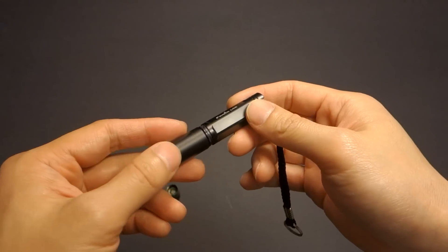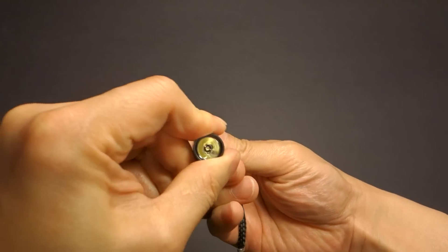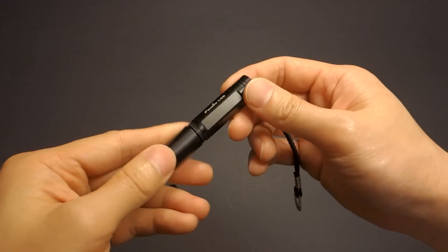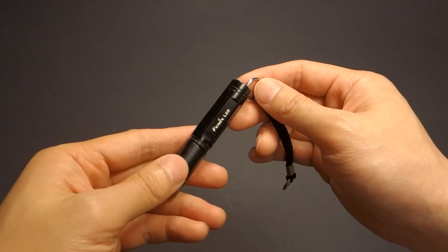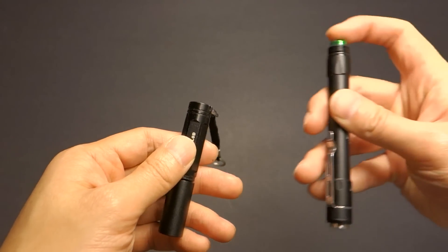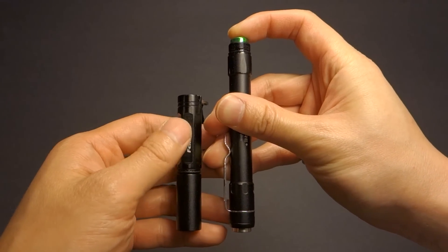Incidentally, it carries the same thread pitch size as the Fenix L0D, thus allowing me to attach the head, although not necessarily being able to operate it. But it kind of gives you an idea of what perhaps a single cell MT06 might look like. So perhaps like a MT04 or MT05, whatever the nomenclature might be.